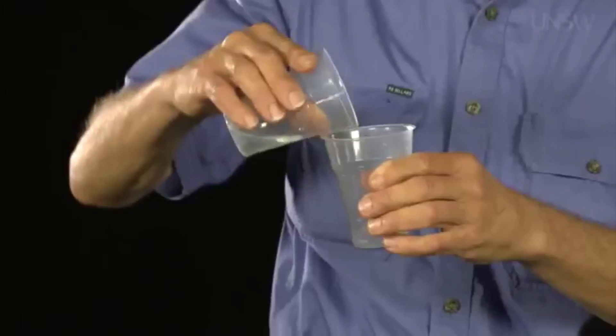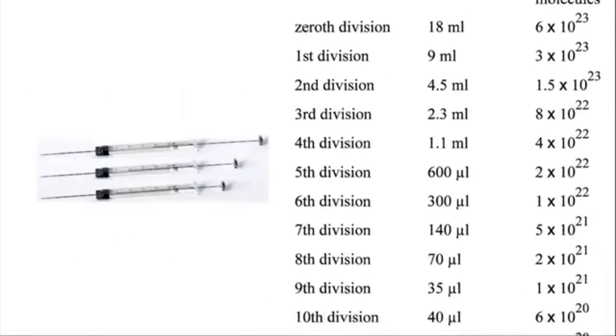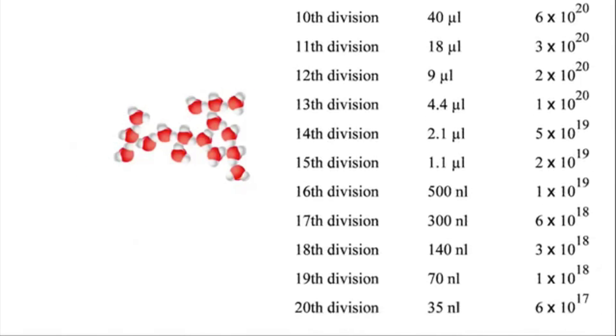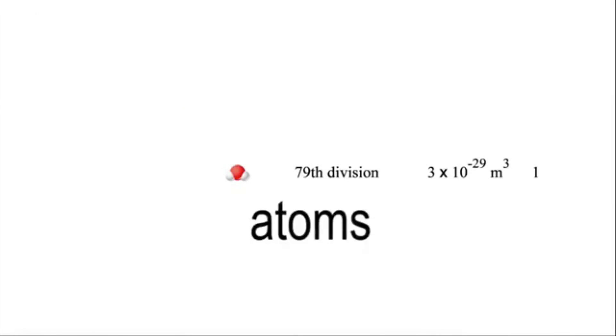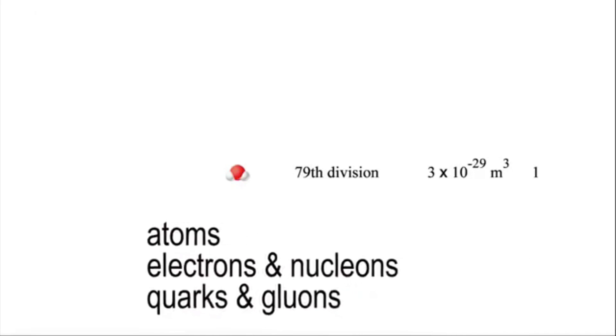And on the very small scale, many ancient questions also now have answers. What is matter? Can we divide it indefinitely or are there indivisibles? I divide water in half and it's still water. I can divide it again and again. Now we know that after several dozen divisions we arrive at molecules, which are made of atoms, which are made of electrons and nucleons, and then quarks and gluons. But don't worry. Despite the huge progress we've made on both the cosmological and the particle scales, there are still more questions left for you to puzzle over and perhaps one day to answer.